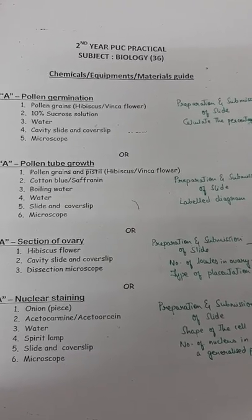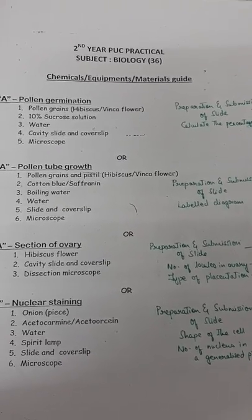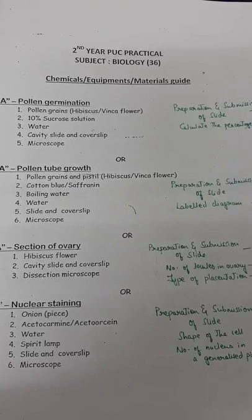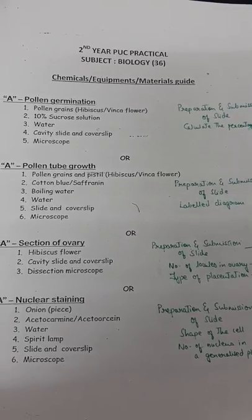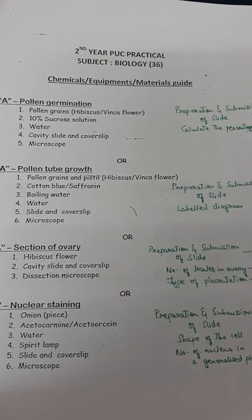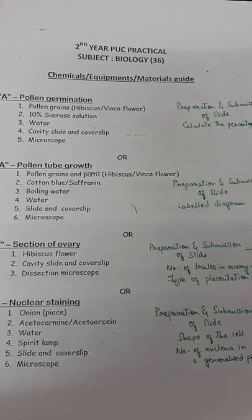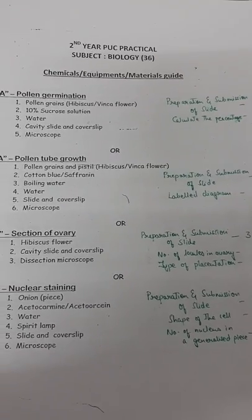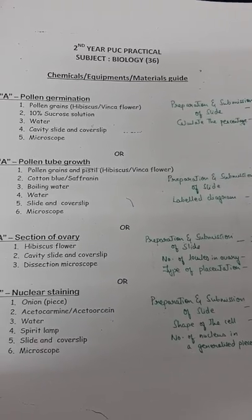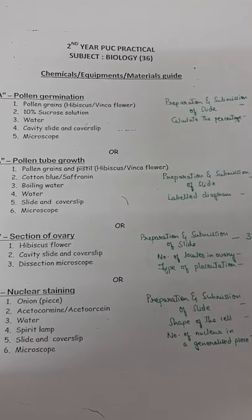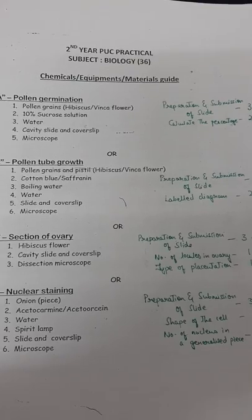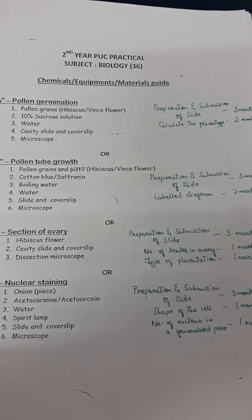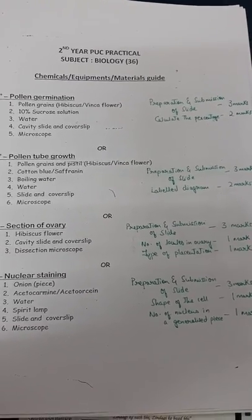The first choice is pollen germination, where you take pollen grains of hibiscus or vinca flower and using a cavity slide and cover slip, exhibit the pollen germination and formation of pollen tube. Preparation and submission of this slide gets you three marks, and calculating the percentage of pollen germination gets two marks.